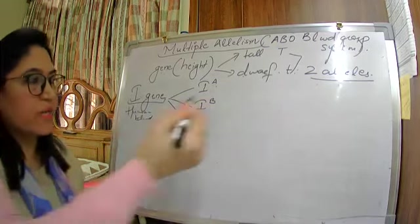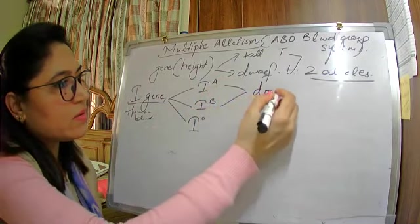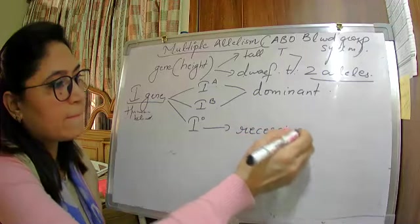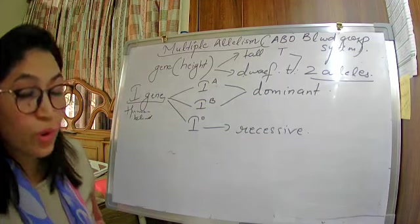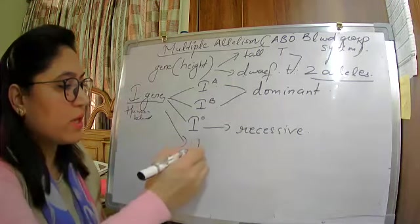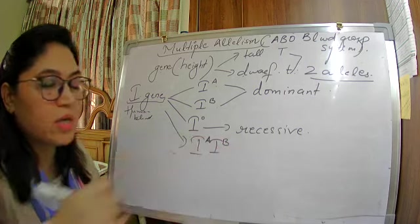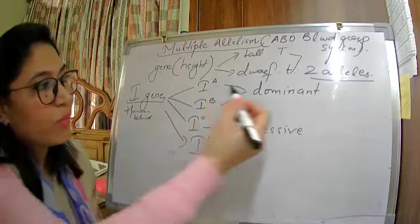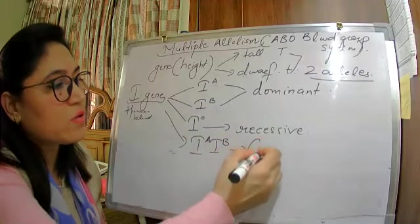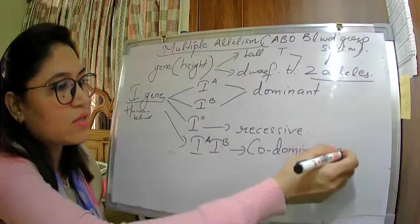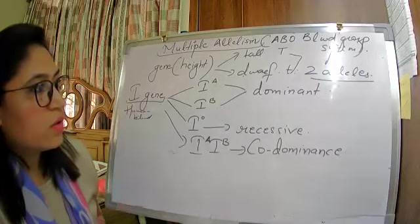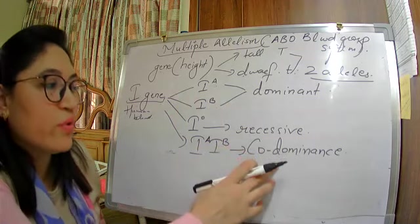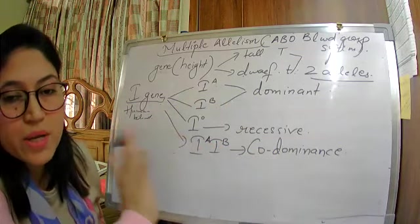Out of these three alleles, A and B are dominant genes and O is the recessive gene. If there is a combination of both A and B — since both are dominant — and both dominant alleles express themselves, that phenomenon is called co-dominance.